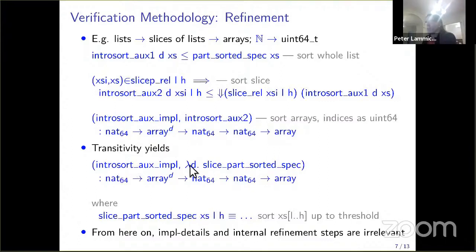The important thing is, once we have done all this, all these internal steps and refinement steps get irrelevant. The only thing we need to know is this lemma. We can implement the partial sorted specification by this implementation. When we use this algorithm in a bigger context, we only use this lemma. This is how refinement makes the proof modular.